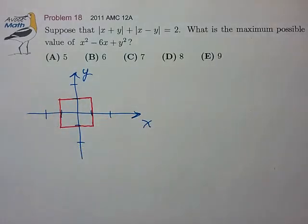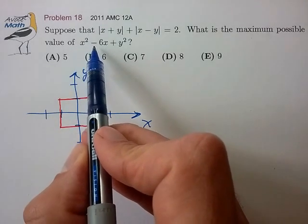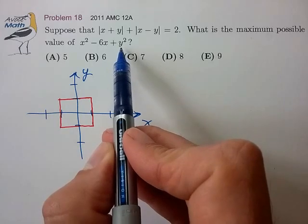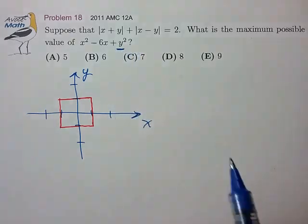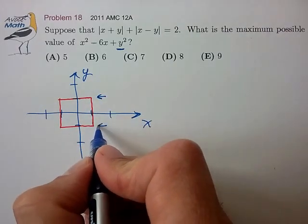Now, once we know that, the rest of this problem is actually pretty easy to sort out. It looks like we're trying to maximize this expression, which contains x squared, minus 6x, and plus y squared. So let's try to maximize the y squared contribution. And that's pretty easy. We just have to choose y to either be plus 1 or minus 1.